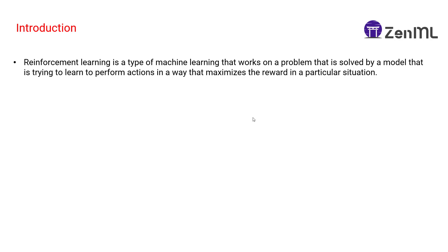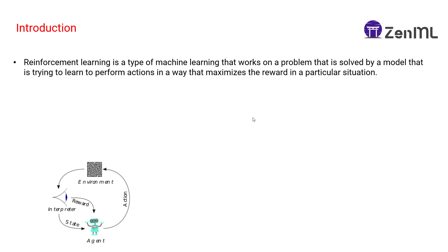Reinforcement learning is a type of machine learning that works in a problem that is solved by a model trying to learn to perform actions in a way that maximizes the reward in a particular situation. To explain this, you have an agent — let's assume that this is your model — and this model performs an action in a particular environment. In Atari games, the board of that game is the environment.